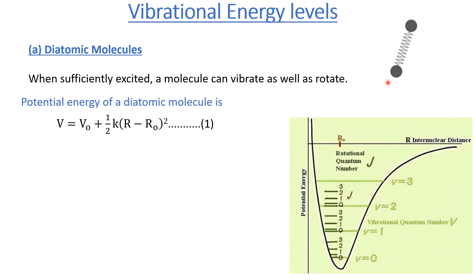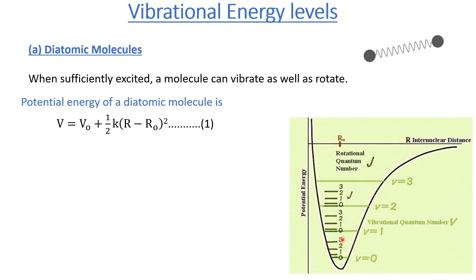The vibrational spectra is complicated because it consists of contributions from the rotational energy levels as well. From this plot, the potential of a diatomic molecule is represented, and we have different values for V equal to 0, V equal to 1, V equal to 3. These are known as the vibrational quantum numbers, and each vibrational quantum number consists of internal rotational quantum numbers as well.